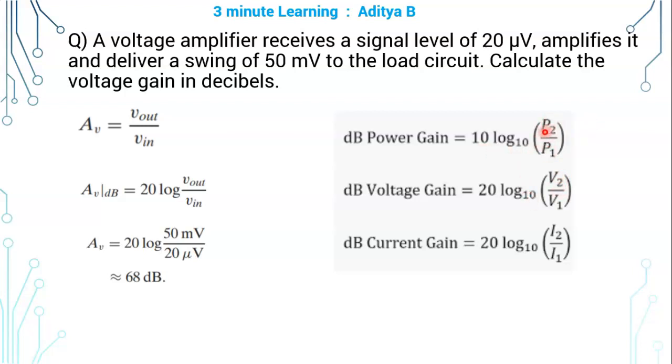So you can replace P2 by V2 square and P1 by V1 square, or you can replace P2 by I2 square and P1 by I1 square, considering normalized resistance R equals 1 ohm. In that case, you are going to get 10 log of I2 square by I1 square to the base 10, which is going to become 20 log of I2 by I1 to the base 10.